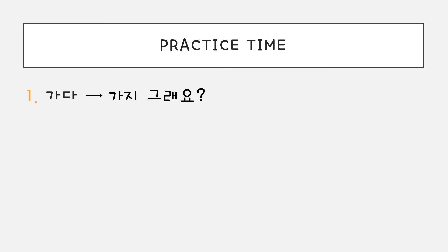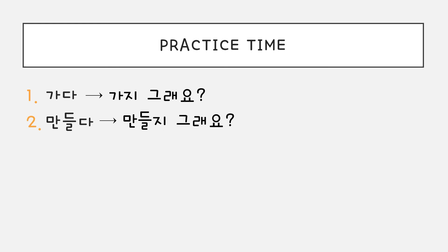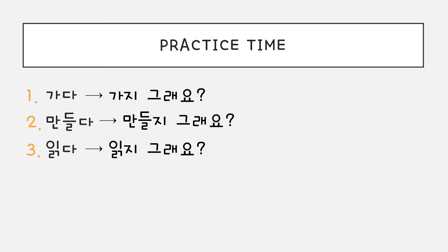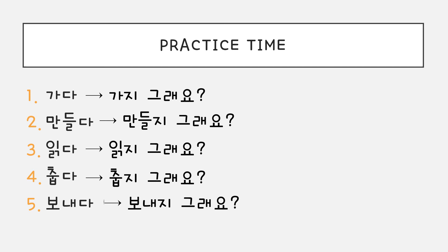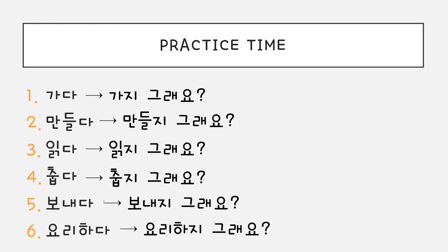Now let's do some practice. Let's change these verbs to 지 그래요. 가다 → 가지 그래요. 만들다 → 만들지 그래요. 읽다 → 읽지 그래요. 춥다 → 춥지 그래요. 보내다 → 보내지 그래요. 요리하다 → 요리하지 그래요.